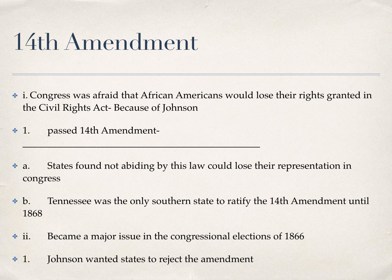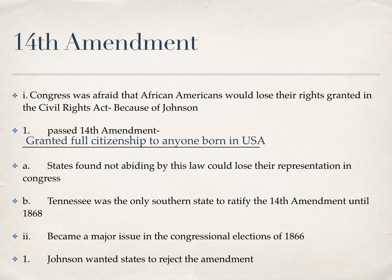Congress, afraid that African Americans would lose their rights granted in the Civil Rights Act because of Johnson, passed the 14th Amendment. The 14th Amendment grants full citizenship to anyone born in the USA, basically removing race or color as a factor when it comes to being born on the land of the United States. States not abiding by this law could lose their representation in Congress. Tennessee was the only Southern state to ratify the 14th Amendment until 1868.